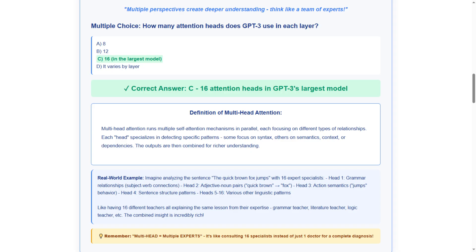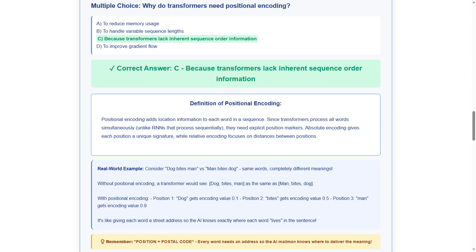The memory tip reminds us multi-head equals multiple experts, like consulting 16 specialists instead of just one doctor for a complete diagnosis. Remember, specialist consultation approach. Our next question addresses a crucial transformer limitation.